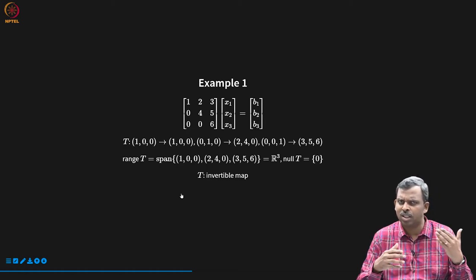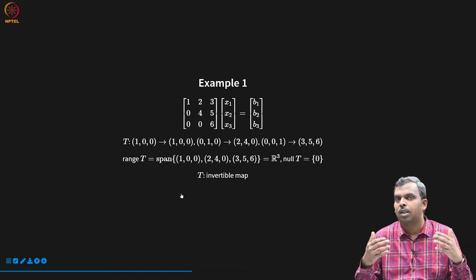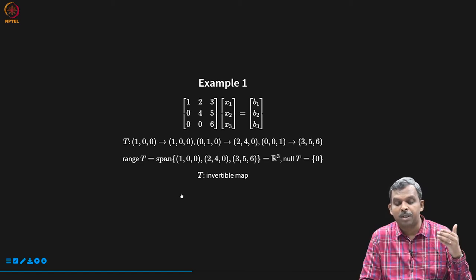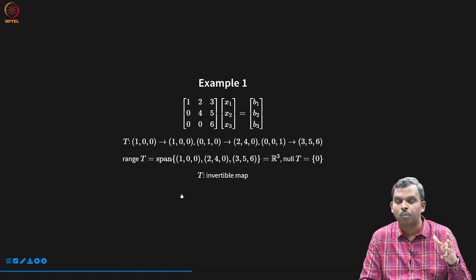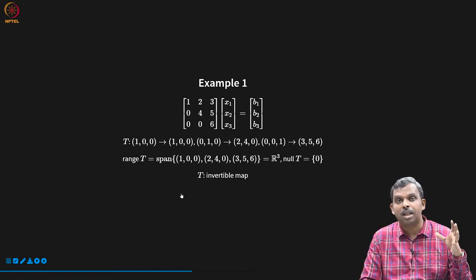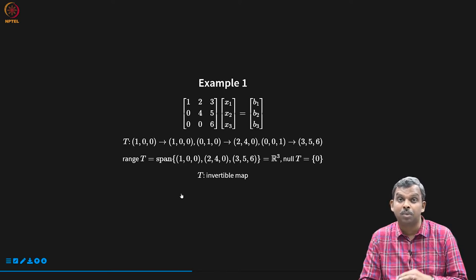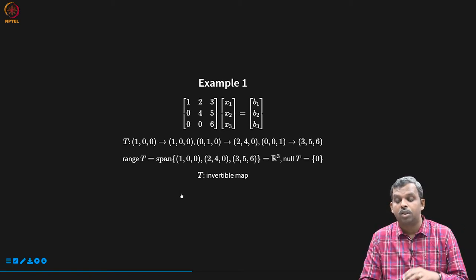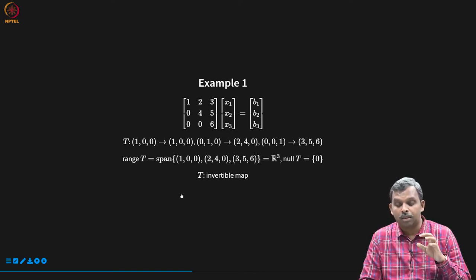What is the range of this linear map? We already saw that the range is important — b needs to be in the range, otherwise there is no hope of a solution. The range of this linear map is simply the span of the columns: (1,0,0), (2,4,0), (3,5,6). If you work it out, these are linearly independent. In R^3, you have three linearly independent vectors — that is a spanning set, so you span the whole thing. The range of T becomes R^3. Once range becomes R^3, you know null is going to be just {0}, because by the fundamental theorem, 3 equals 3 plus something, so that something becomes 0 — the dimension of null T goes to 0.